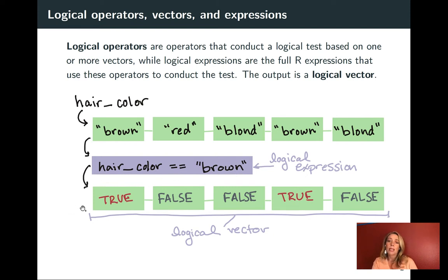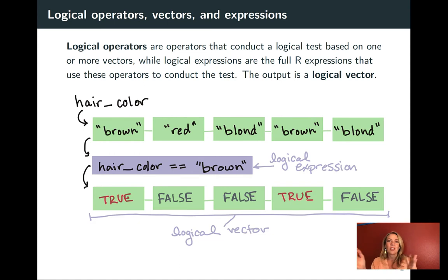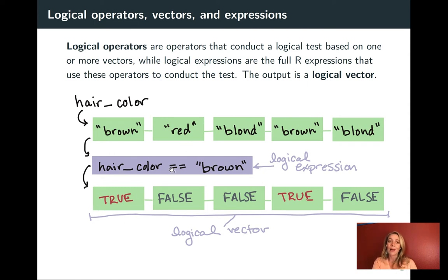The output we get is a vector the same length as our original vector, where for each spot it gives the check for the condition we asked for. For example, the first value in hair color is brown — that does equal brown, so our first value is true. The next value is red and that does not equal brown, so our next value is false, and so on.